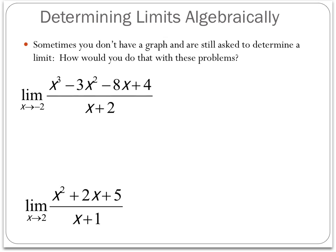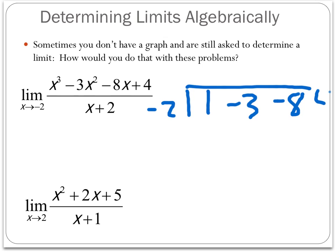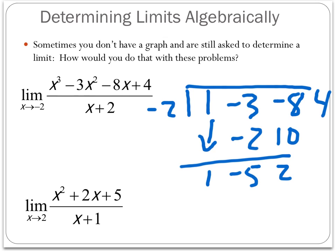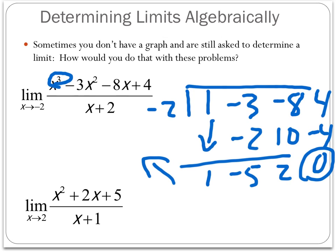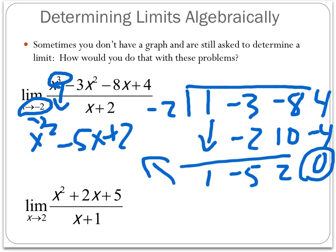Here's another example — a more complicated equation with a cubic numerator, where factoring is tougher. This is where synthetic division comes in handy. I put negative 2 out front and the coefficients underneath: 1, negative 3, negative 8, and 4. Using synthetic division — drop the first number down, then multiply and add repeatedly. We get a remainder of 0, which is a good sign in calculus. The resulting polynomial is x squared minus 5x plus 2. Substituting x equals negative 2 gives 16, and that's the limit.